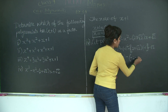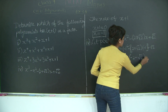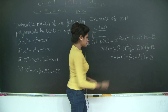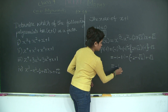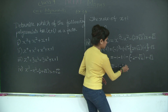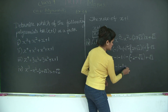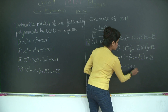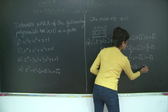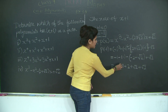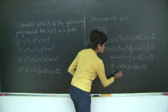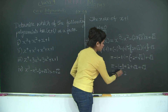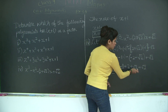Expanding: root 2 times minus 1 gives minus root 2, plus root 2. So we have minus 1 minus 1 plus 2 minus root 2 plus root 2. Minus 1 minus 1 gives minus 2. Plus 2 as it is. Minus root 2 plus root 2 gives 2 root 2.